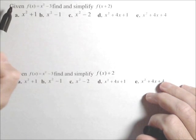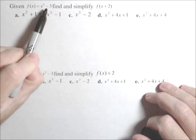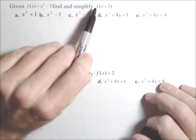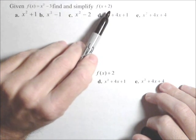So here, let's start with the first one. We have that f of x is x squared minus three, and we want to find and simplify f of x plus two with the x plus two in the parentheses.